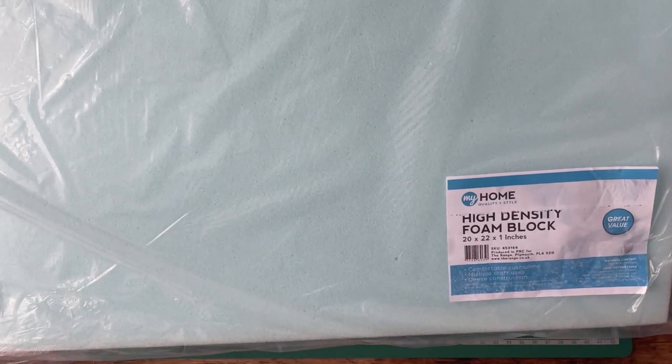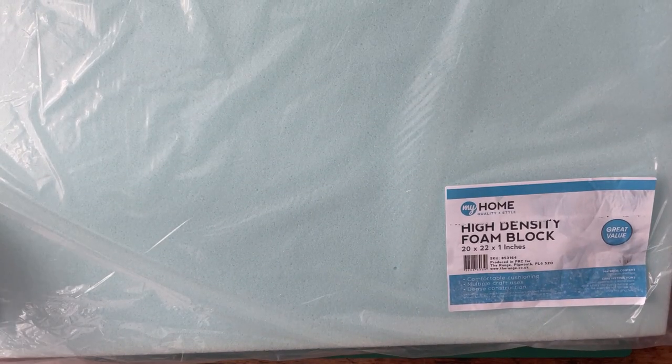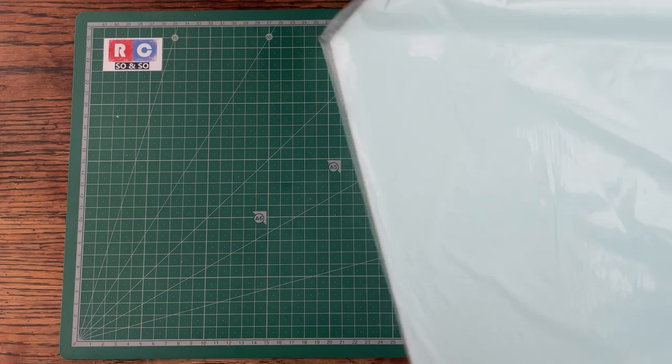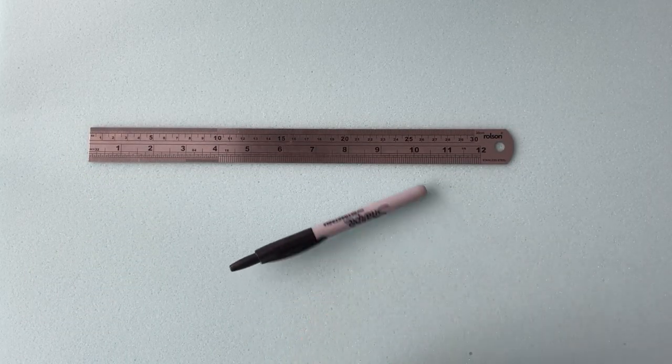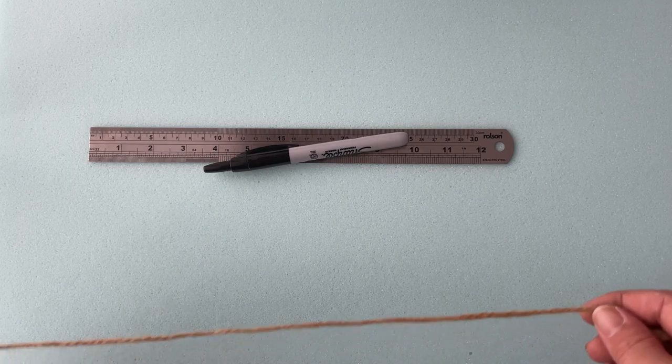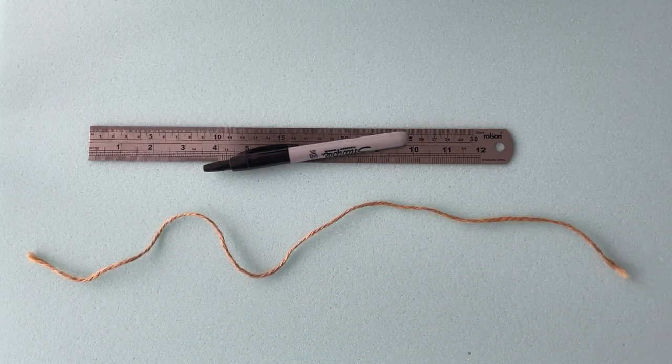On eBay you can get four inserts for £10. I went to The Range and bought this high density foam block for £3. It's about an inch thick and if I plan it well I can get multiple wheels from it. What do we need for this job? I'm going to use a steel ruler, a pen, a piece of string, and some sharp scissors.